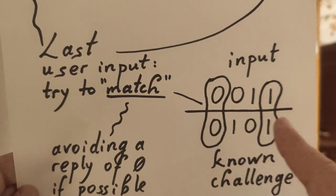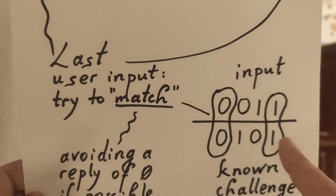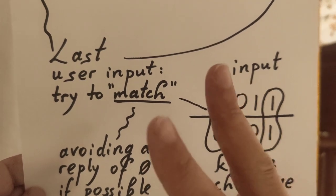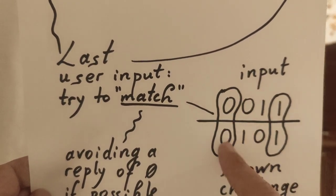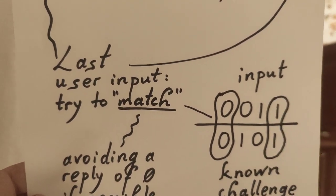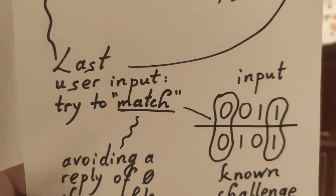So, here, for instance, if these two entities would be compared, then we would be having a matching value of two. Because once these zeros are matching, and once the ones are matching. Here, we have no match. Okay?